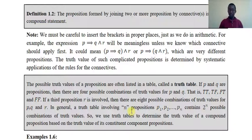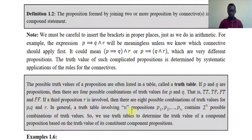The possible truth values of a proposition are often listed in a table. If p and q are propositions, there are four possible combinations of the truth values for p and q.